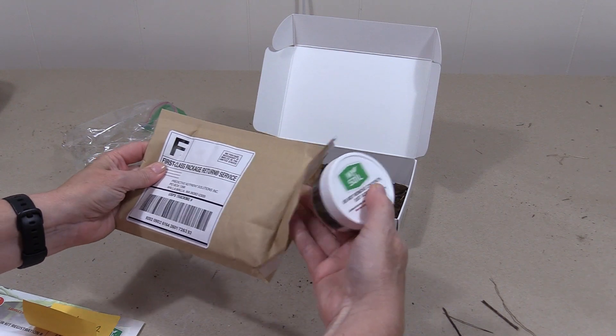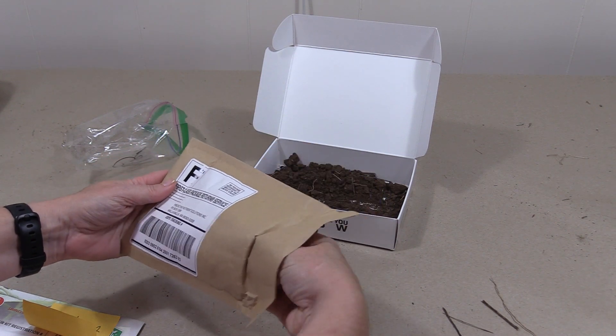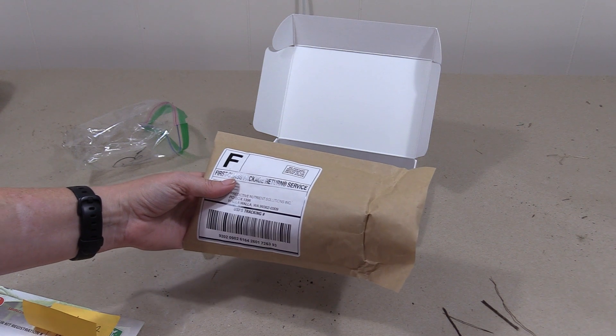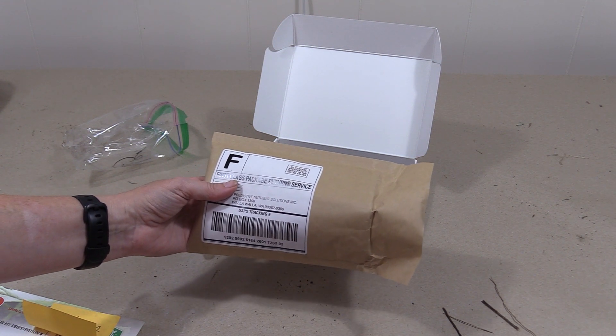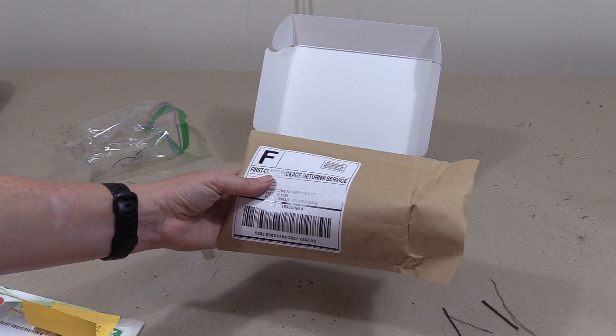You're going to take your sample, place it in the postage paid envelope, seal up the envelope, drop it off at the post office. And in about six to eight days, you'll get an email that has all of the information so you can log in and see what's in your soil.